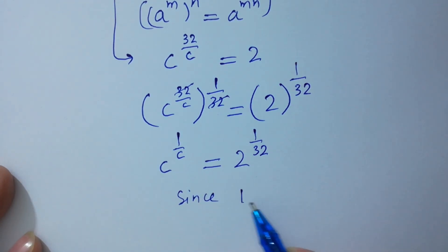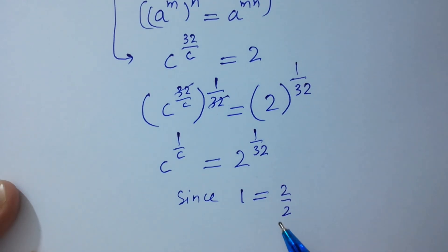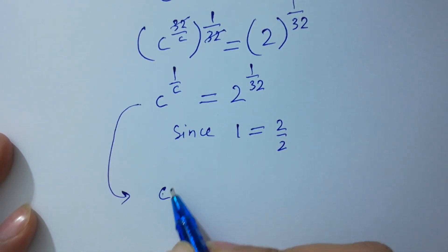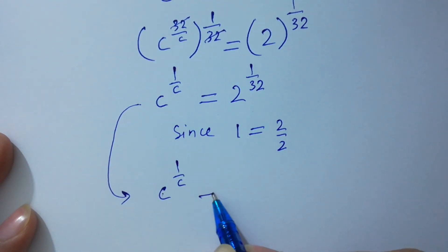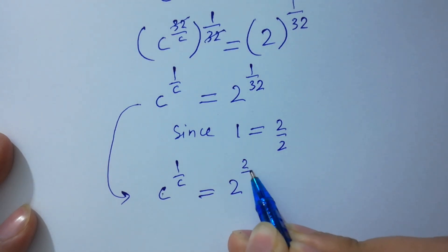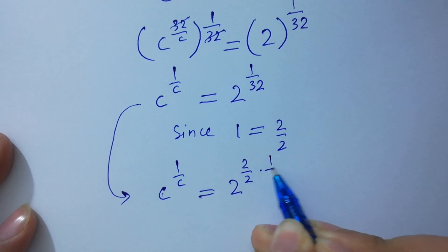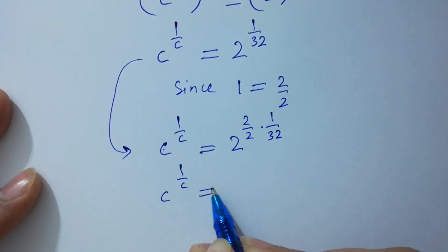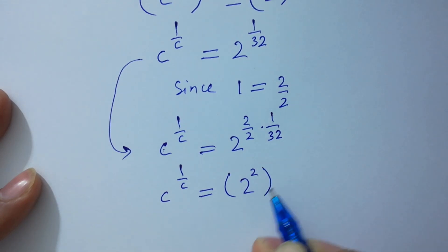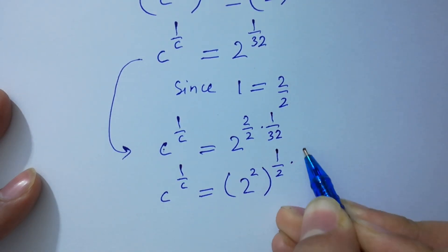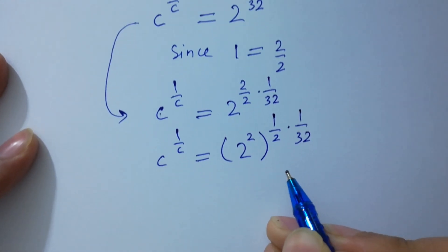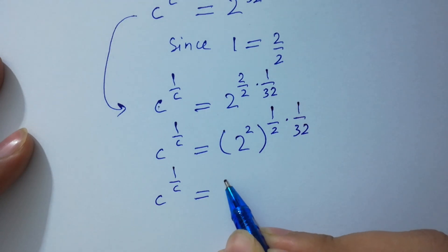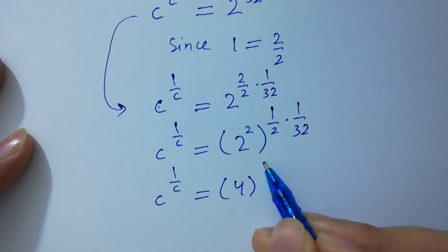Since 1 over 32: since 1 equals 2 over 2, so it will be equal to C to the power 1 over C equal to 2 to the power 2 over 2 times 1 over 32. This gives C to the power 1 over C equal to 2 squared to the power 1 over 2 times 1 over 32, with C to the power 1 over 32.